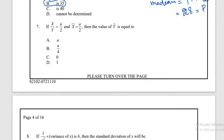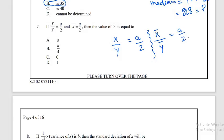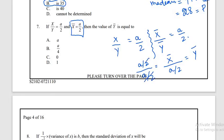Question number 7: given x̄/ȳ = a/2 and x̄ = a/2, we need to find the value of ȳ. Substituting x̄ = a/2 into the ratio: (a/2)/ȳ = a/2. The a/2 terms cancel, giving ȳ = 1. The correct answer is option D.